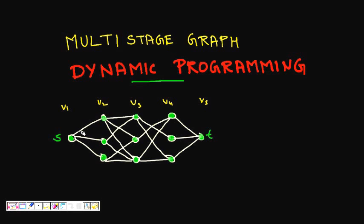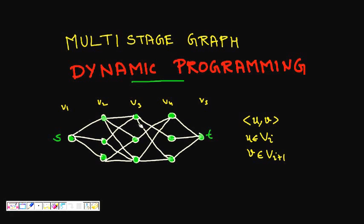At each of the stages, if an edge is UV, then U must belong to stage Vi and V should belong to stage Vi+1. So the nodes at the endpoints of an edge should belong to consecutive stages.